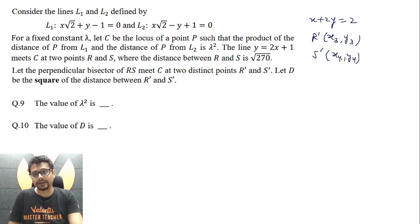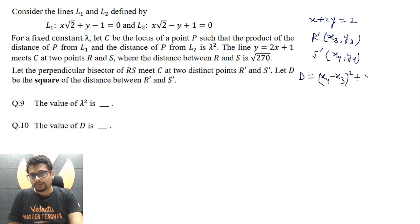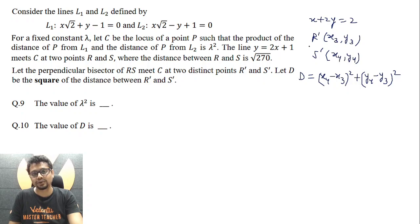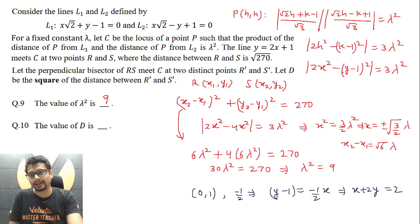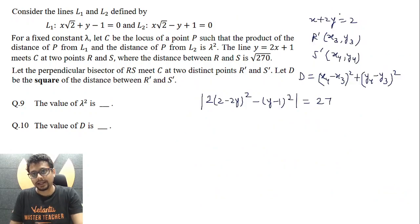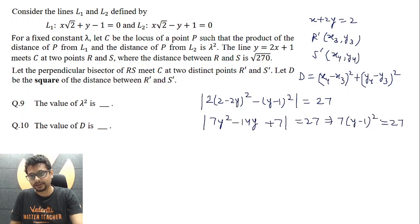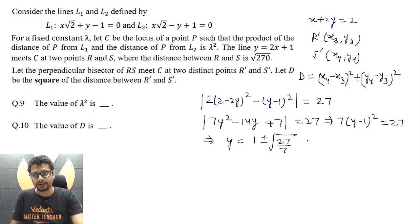Let R' = (x₃, y₃) and S' = (x₄, y₄). We solve x + 2y = 2 simultaneously with the curve C: |2x² − (y−1)²| = 3λ² = 27. Substituting x = 2 − 2y into the curve equation and simplifying, we obtain y = 1 + √(27/7) or y = 1 − √(27/7). So |y₄ − y₃| = 2√(27/7).